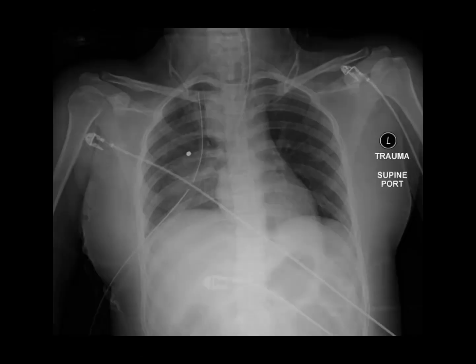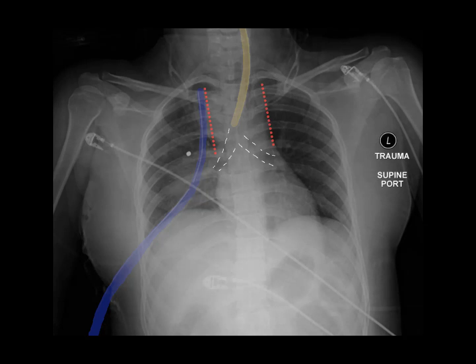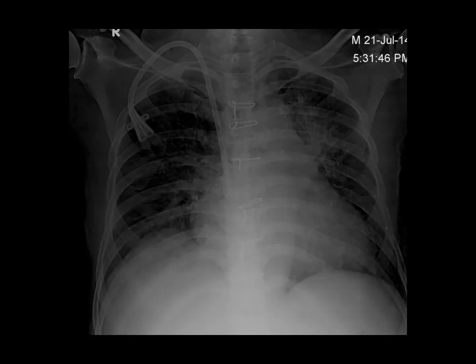Here's a patient post-chest tube placement for right chest injury. We see the endotracheal tube and the carina, and we see the right chest tube itself with its proximal side hole well within the thoracic cavity and the tip against what appears to be a widened mediastinum.